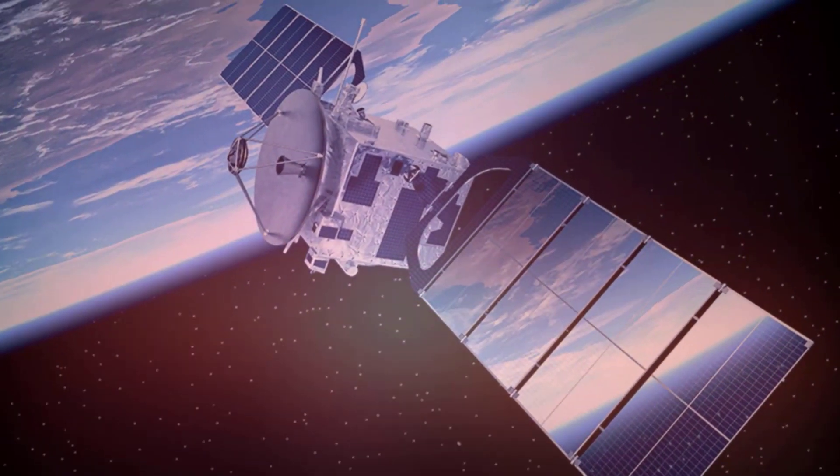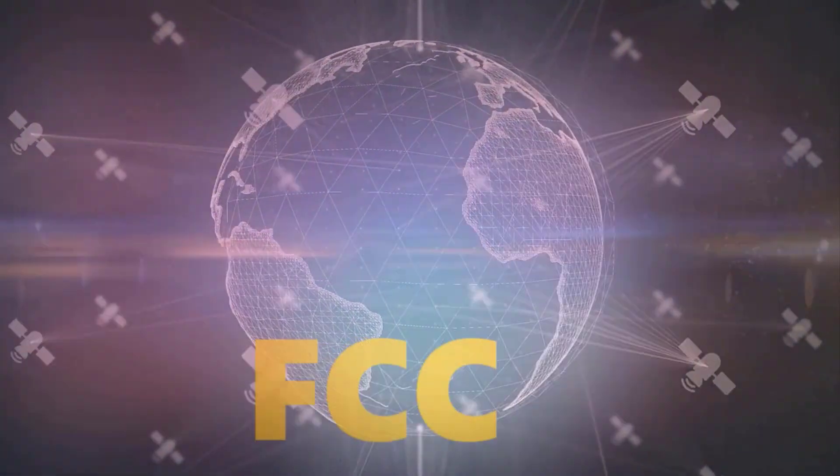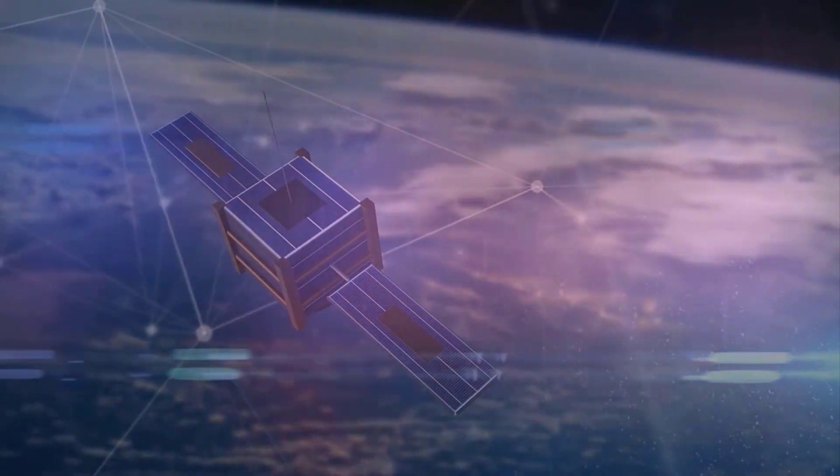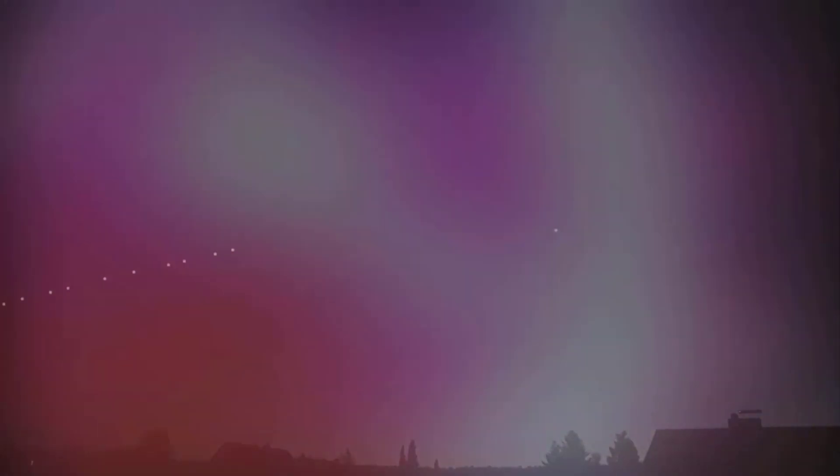After a successful launch of two prototypes, Tintin A and B, SpaceX kept pretty quiet about what was next for the Starlink project. In November 2018, the FCC approved SpaceX to deploy 7,500 satellites into orbit, on top of the 4,400 that were already approved. On May 24, the first batch of production satellites was launched into orbit, and people around the world quickly started to spot the train of satellites moving across the night sky.